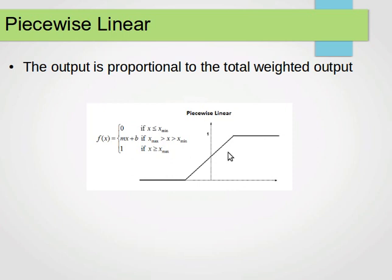However, if the value of the input is between those two, between xmin and xmax, then the output is a linear function of the input. So mx plus b is the equation of this line here.